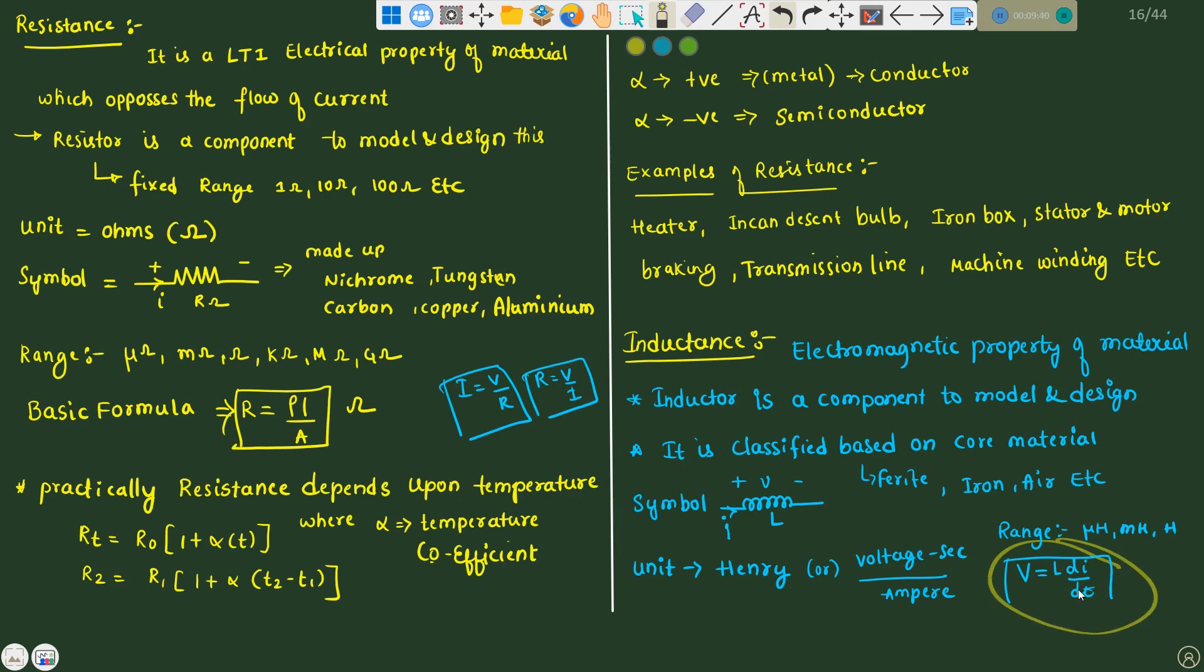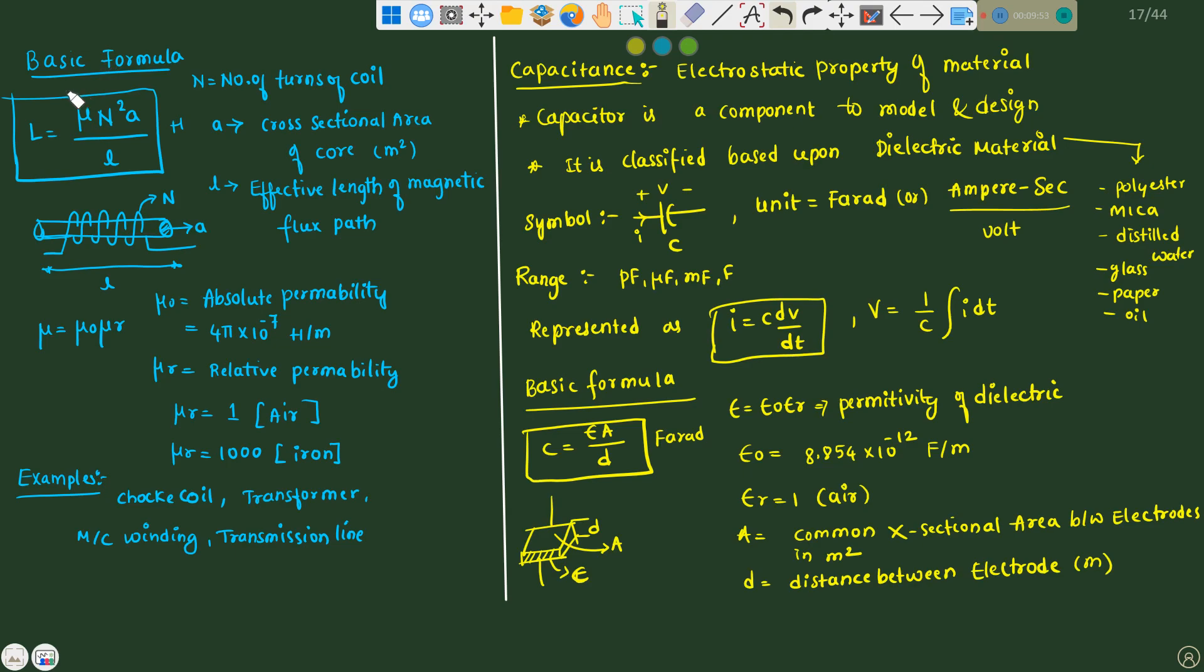There are nine kinds of Ohm's law with different components. I will explain in further classes. If you talk about basic formula for inductance, L equals to mu into N square A divided by L, where N is number of turns of a coil. You can see the number of turns. Area of cross sectional of core in meter square, where L is the length of the magnetic flux path. Mu is permeability. There is absolute permeability and its value is 4 pi 10 raise to minus 7 Henry per meter, and relative permeability. Relative permeability in air or free space is 1, and relative permeability in iron is 1000. Examples of inductance: choke coil transformer machine winding transmission line.